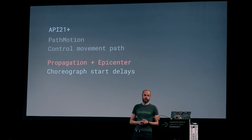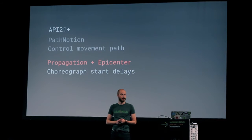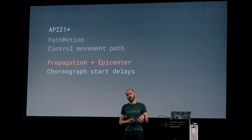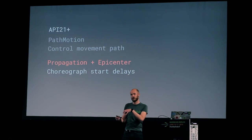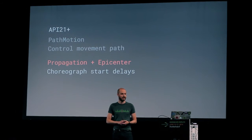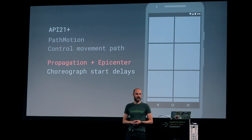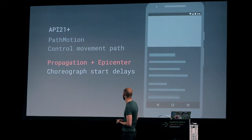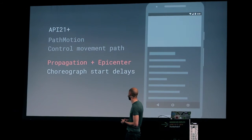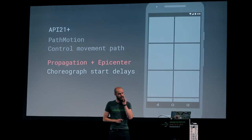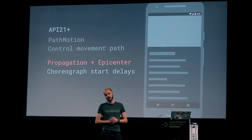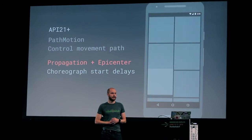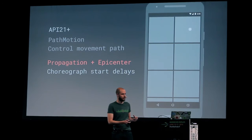You also can have a pattern path motion, so you could have views that move in a path other than just the arc, which is most of the time the right thing to use. We also have propagations and epicenters, which allows you to move views in and out of scene with a start delay depending on where the screen has been touched. We have the explode, which is very powerful — but you should use it wisely, because you can easily confuse the users.